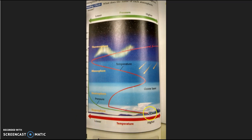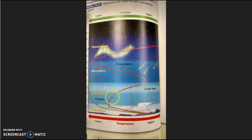This diagram from our book shows that. As this red line moves closer to the left, the temperature is getting lower. But that's in the troposphere. As we get into the stratosphere, the temperature starts to go the other way, which means our temperature is increasing.